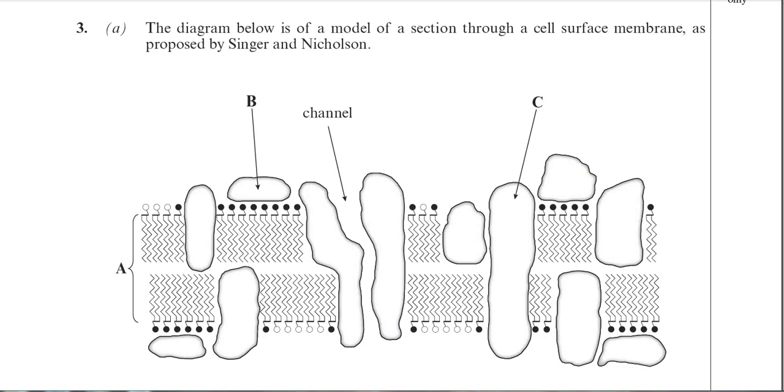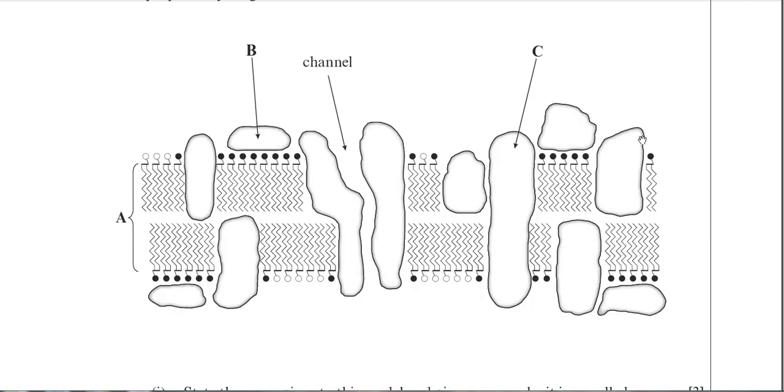This is question 3 from the June 2011 BY-1 paper. This question is about membrane structure and membrane transport as well. Let's start going through this question. The diagram below is of a model of a section through a cell surface membrane as proposed by Singer and Nicholson. You need to remember those two scientists - they come up quite a bit on membrane questions.